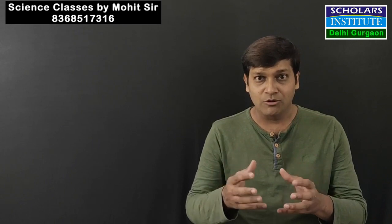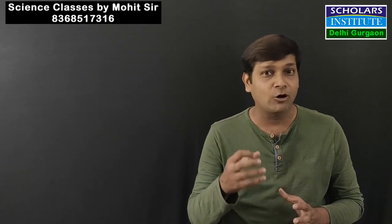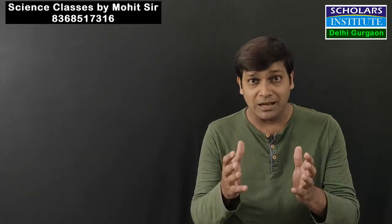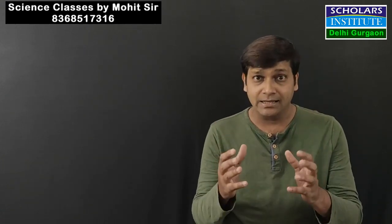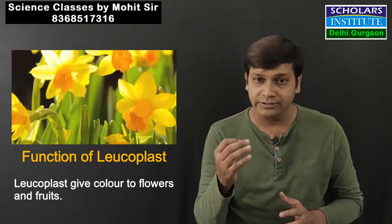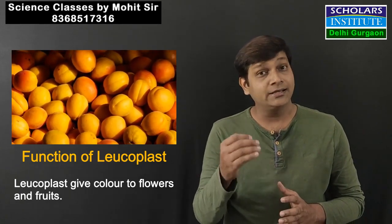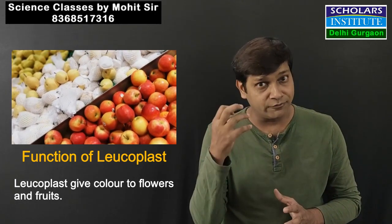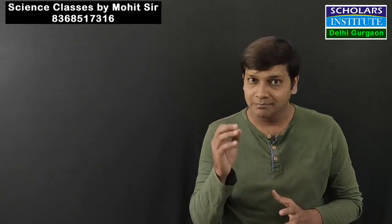Flowers and fruits are very beautifully colored — mangoes are yellow, roses come in red, pink, and orange. This color comes from Chromoplast, a type of plastid that contains colored pigments. These colored pigments give color to flowers and fruits. Therefore, if someone asks which plastid is found in flowers and fruits, the answer is Chromoplast.